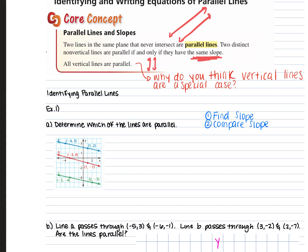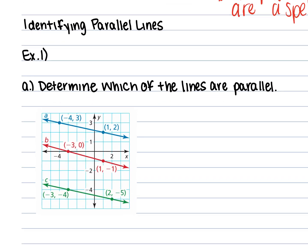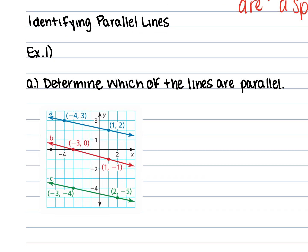In Example A, we have to determine which of the lines are parallel. The first thing we're going to do is find the slopes and then compare the slopes of the three to see if they're the same. We have three different lines, so I have to use the slope formula — y2 minus y1 over x2 minus x1 — three different times.